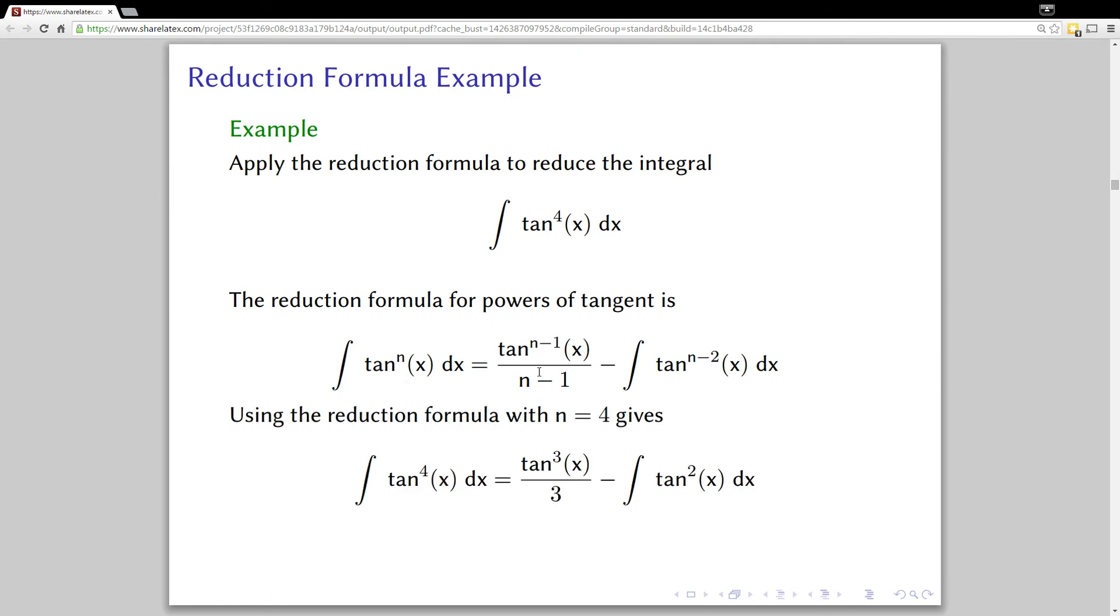We would get tan to the third x over 3 minus the integral of tan squared. What the reduction formula does for you is takes a higher power of tan and rewrites it as an integral of a lower power. If you had a really high power, you might use this repeatedly to bring down the power enough to one that you can do easily.